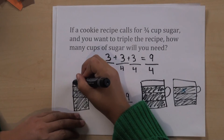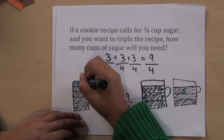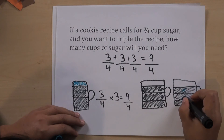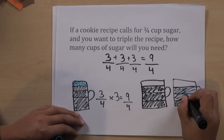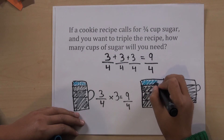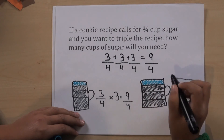If your child has trouble with this, drawing a picture may help them visualize the problem. The answer is 2 and 1 fourths.